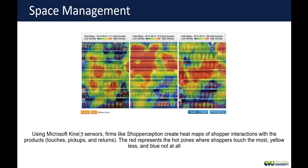On the high-tech side, Microsoft has developed sensors that allow you to create heat maps of where shoppers are interacting with products — touching, picking up, and putting down items. The red zones are hot zones where shoppers are touching the most, yellow is less, and blue is not at all. You can use this to see how to place your products so that you get that red zone right at eye level in a grocery aisle, making it easy for consumers to find things. This is a great use of technology.